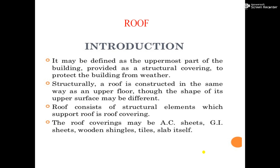The next part of the chapter is the roof. A roof may be defined as the uppermost part of the building provided as a structural covering to protect the building from weather. Structurally, a roof is constructed in the same way as an upper floor, though the shape of its upper surface may be different. The roof consists of structural elements which support the roof covering. The roof covering may be of AC sheets, GI sheets, wooden strings, tiles, or the slab itself.